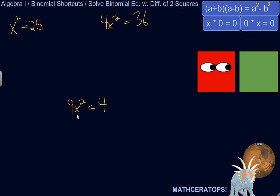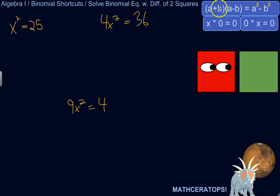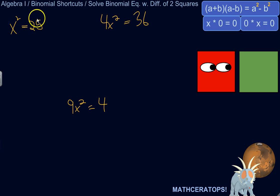Let's work on actually solving some equations using our knowledge that the difference of two squares — some number squared minus some other number squared — can be factored as the product of a sum and a difference: the first number plus the second number times the first number minus the second number. And knowing that if you take anything times zero, it equals zero, we can put these pieces together to solve binomial equations in a pretty cool way.